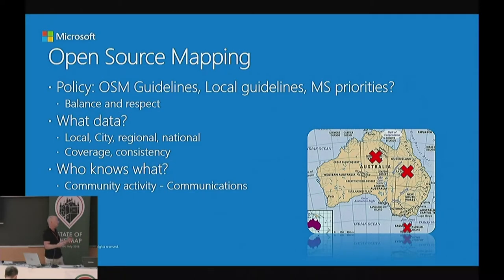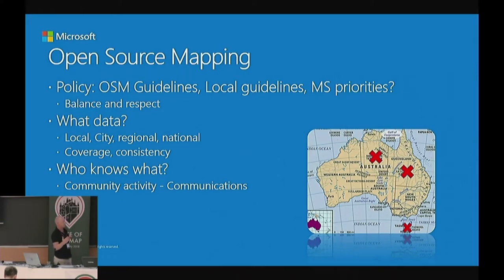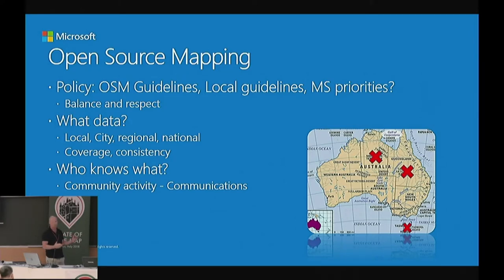The best part of the research was figuring out what data is available — on a local, city, regional, or national level. We noticed pretty quickly that all eight territories within Australia each had their own road authorities tasked with maintaining data for their own network. Three of the territories did not really have much of an open data policy, which was going to be an issue when looking at coverage, consistency, and accuracy. But the most important aspect to being successful was to engage with the local OpenStreetMap community.